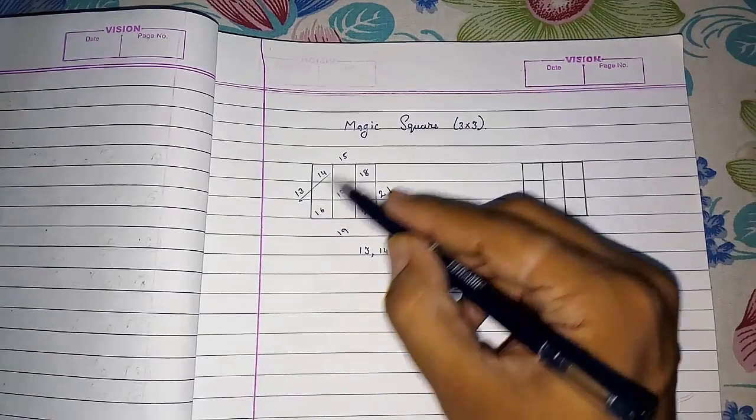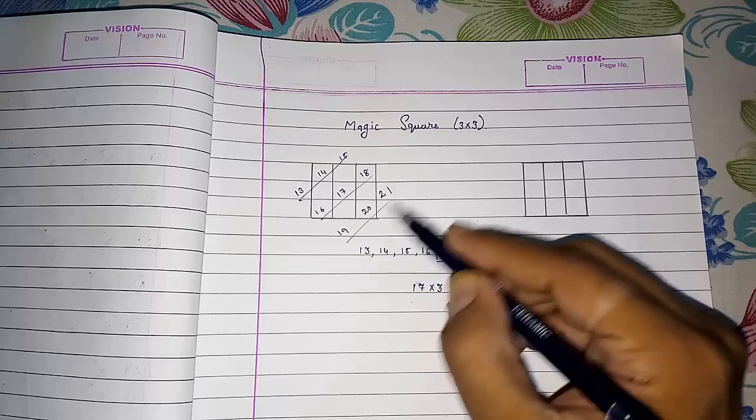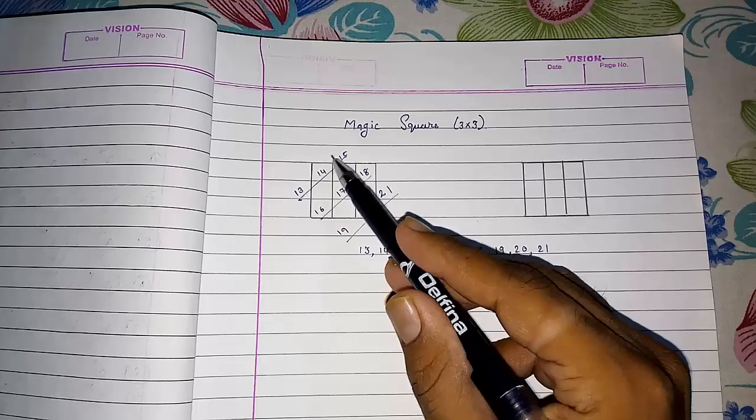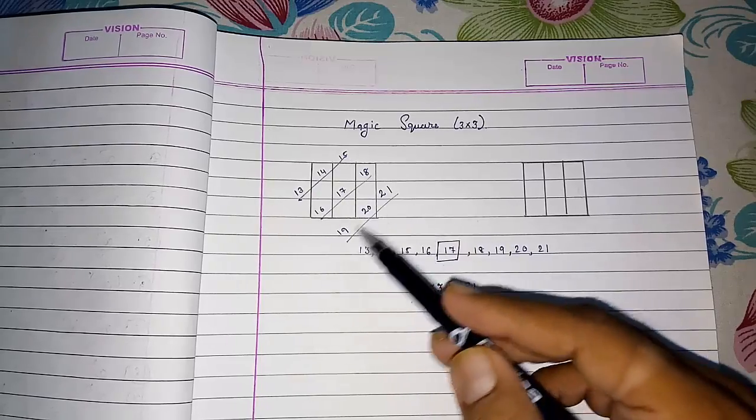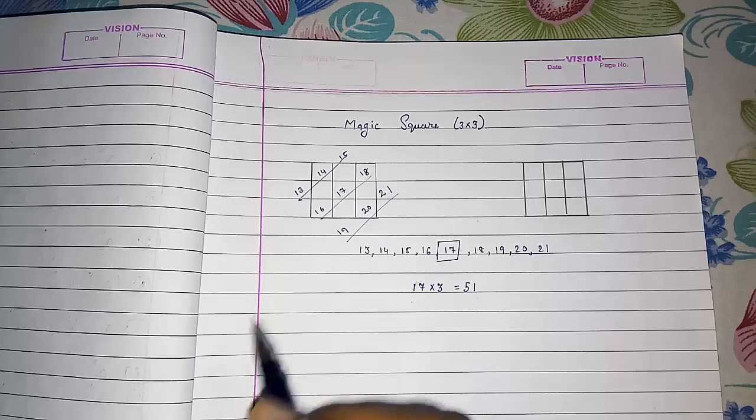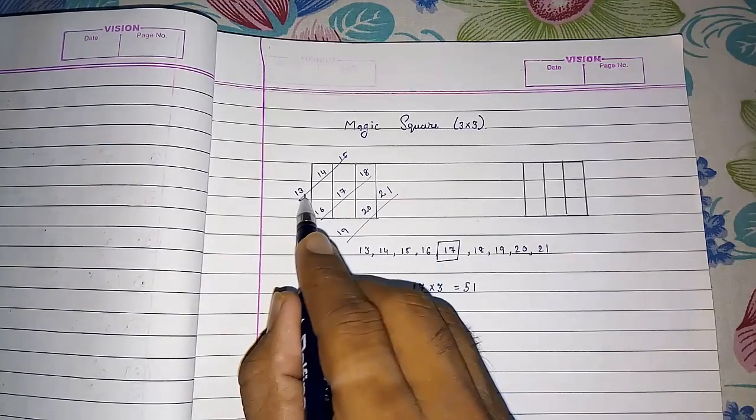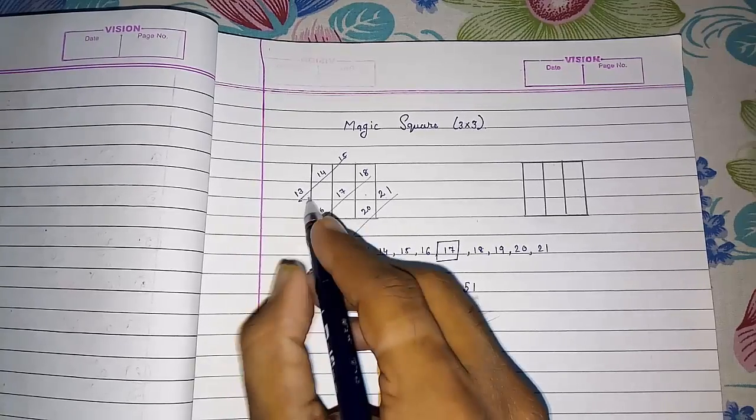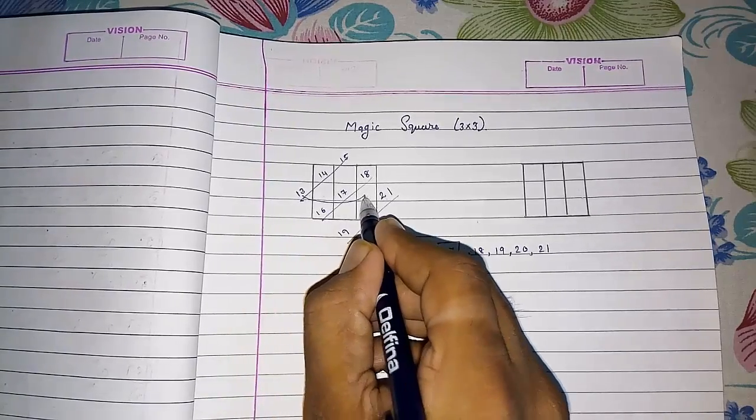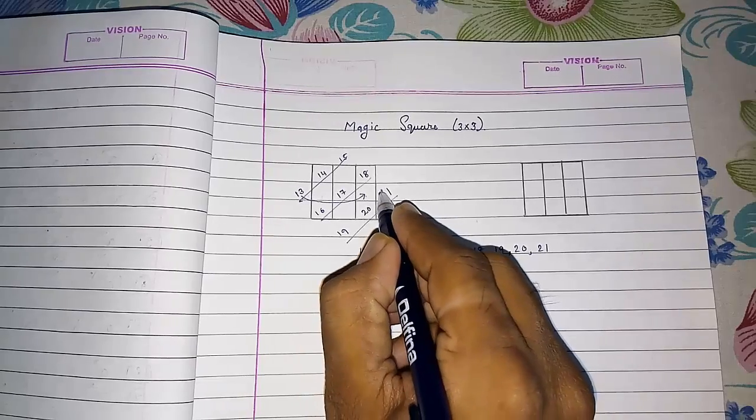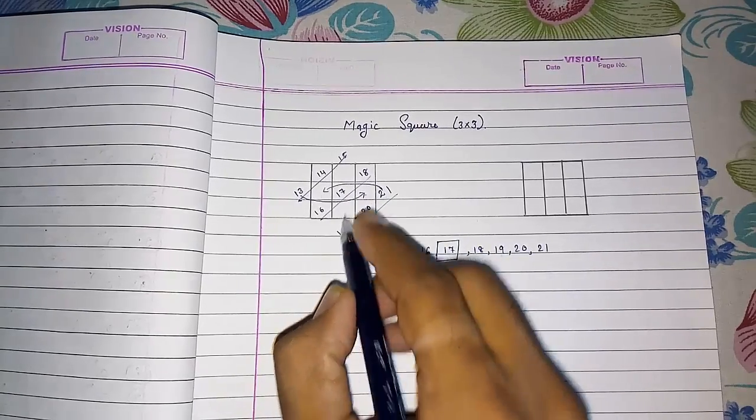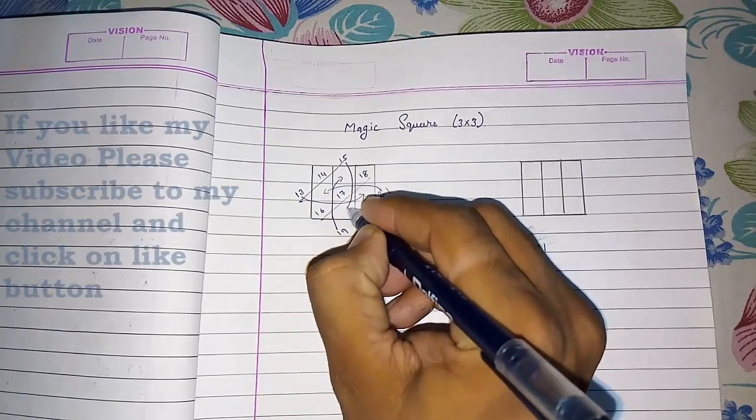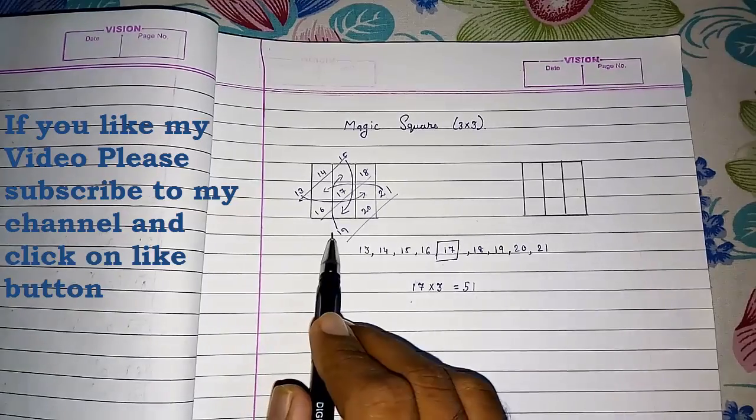You can see easily what I had done. I had written in this way: the middle 3 numbers in the box, and then these 2 outside and these 2 outside the box. Now what we have to do? We have to just convert these. Oh, I am doing an arrow. Take this 13 here, take this 21 here, this 19 in the upper part, and this 15 in the lower part. Four arrows are there.